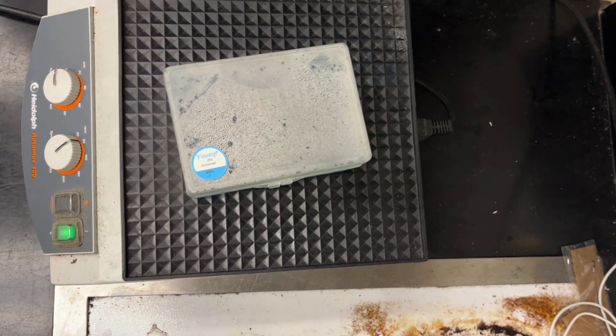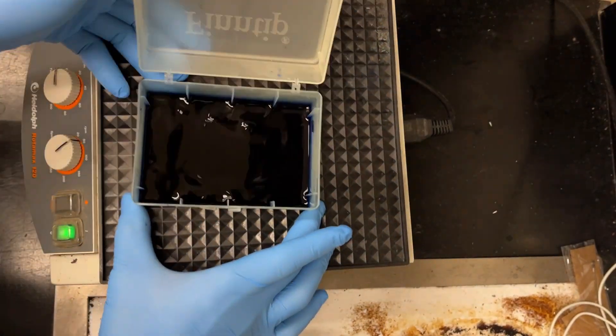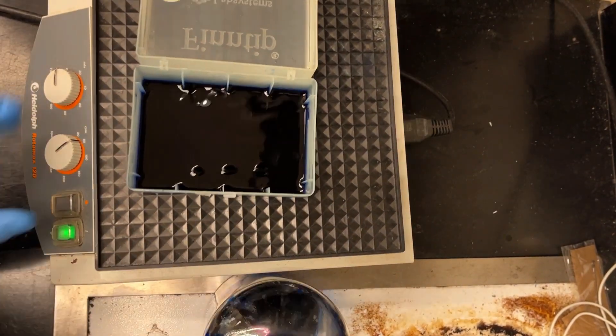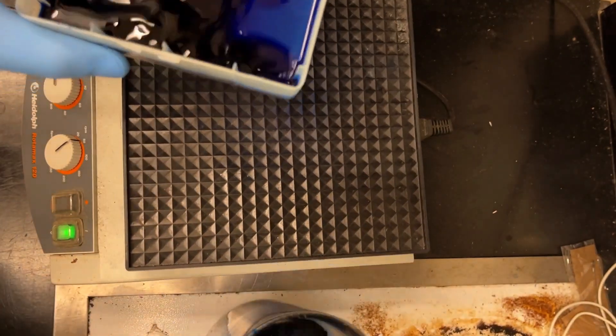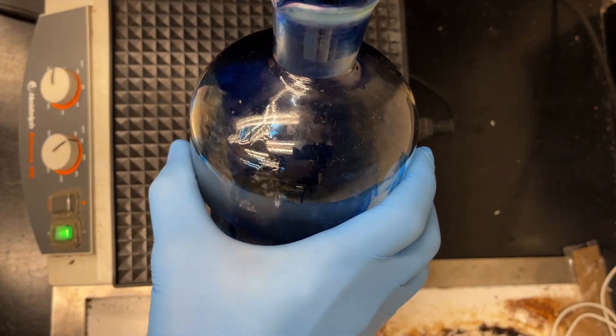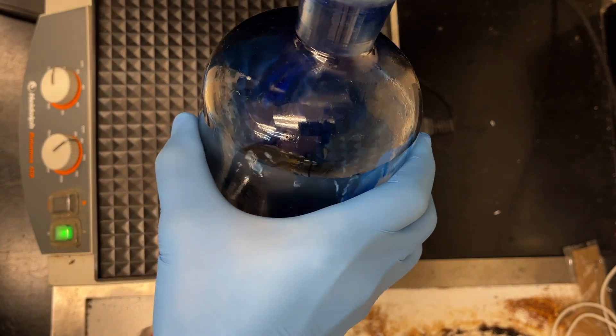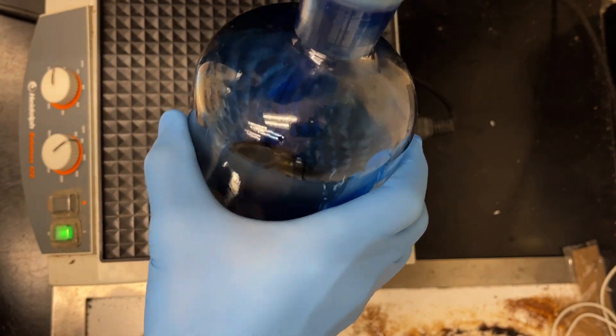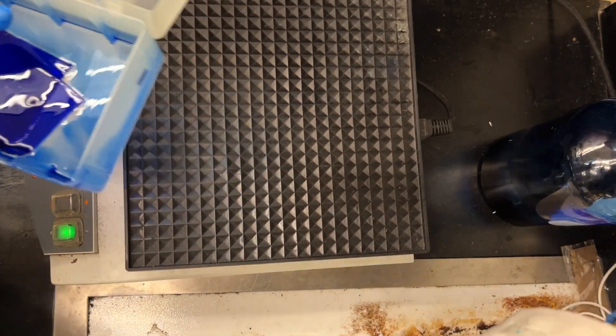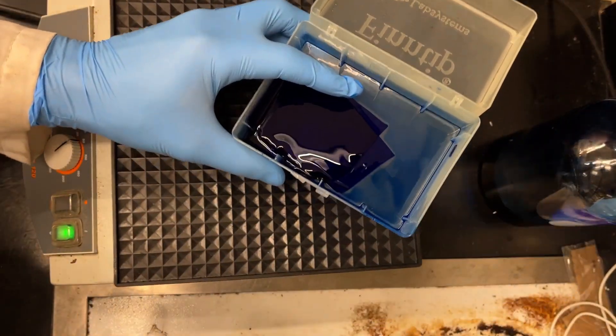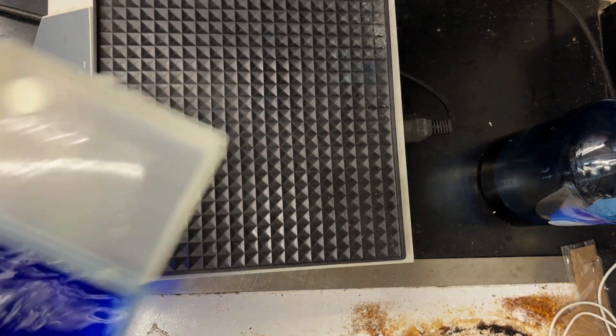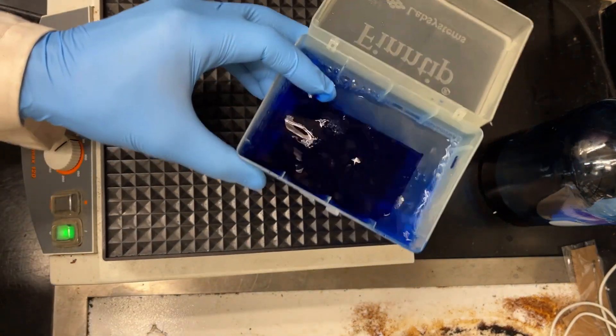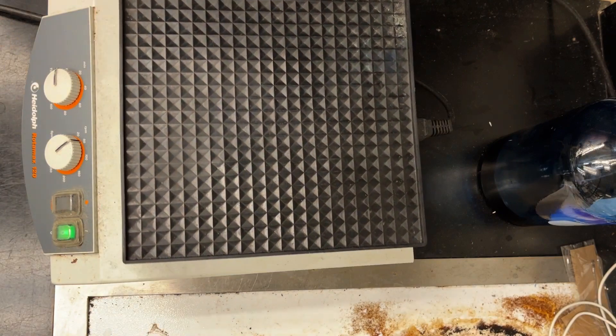And it's now the morning. So we can save the Coomassie. You simply pour it into your container. Remember, use your finger, hold down the gels, and then simply pour it off. Now, the thing about staining with Coomassie is that it stains everything initially, so we actually have to decolorize the gels. But before I do that, I like to just remove some of the excess Coomassie. So just a couple of rinses of distilled water.